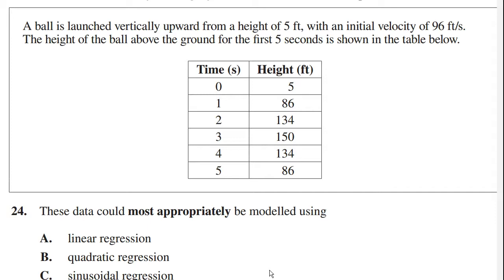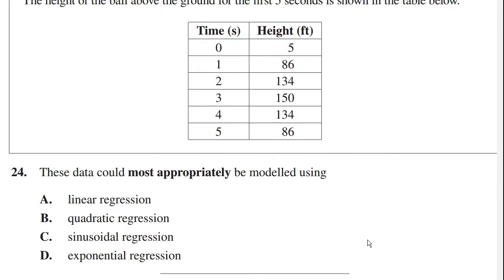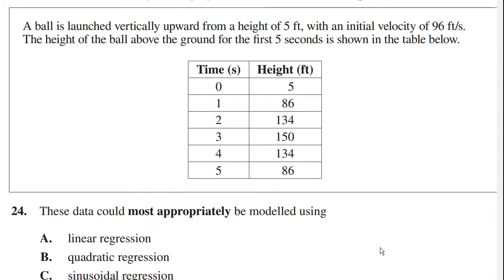A ball is launched vertically upward from a height of five feet, with an initial velocity of ninety-six feet per second. The height of the ball above the ground for the first five seconds is shown in the table below. These data could be most appropriately modeled using. I don't particularly like this question. For the fact that it's almost a bit of a trick question. And quite honestly, it is more of a physics question than a math question. That being said, we can still answer it.